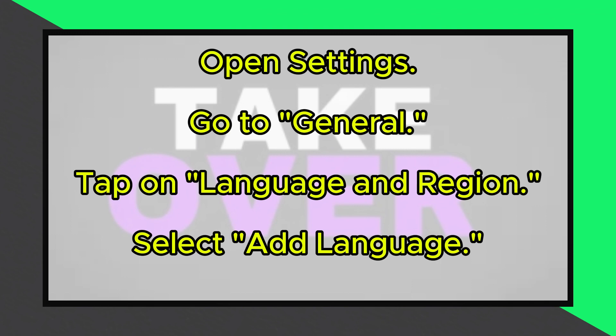First, open the Settings app on your device. From there, navigate to the General section. Scroll down until you find Language and Region, then tap on it.